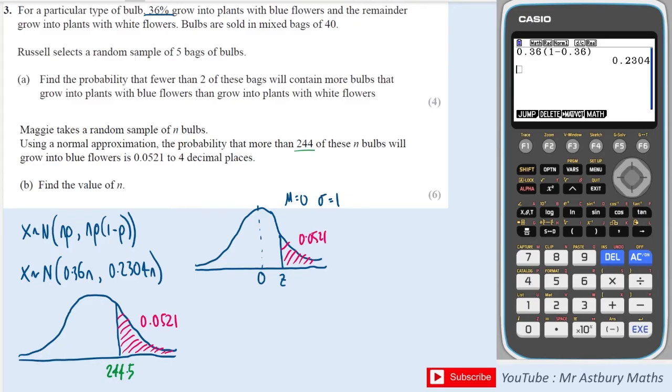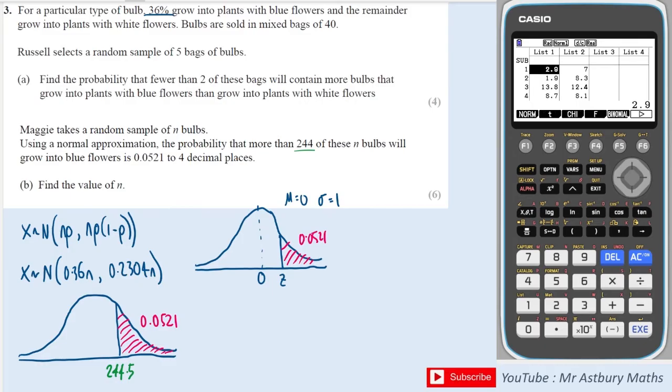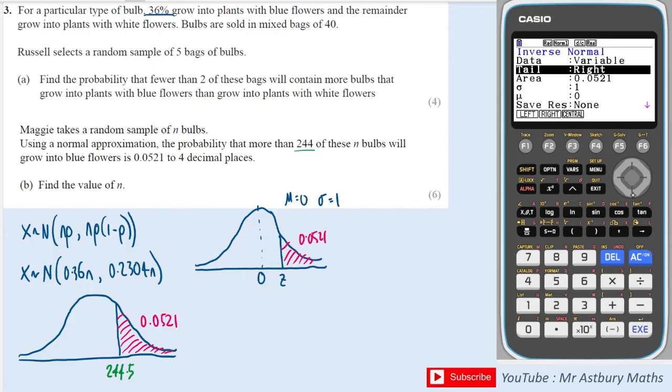Let's go to our calculator to work out this z value. So we do menu, statistics, distribution, normal, and inverse normal. We are looking at the tail to the right as you can see in the diagram. That's the area we want, that is the standard deviation, that is the mu value. So we get a z value of 1.625.